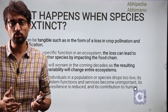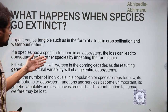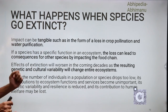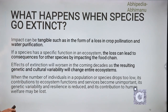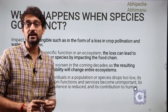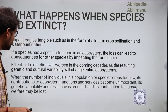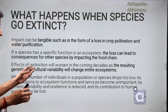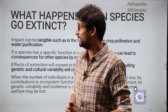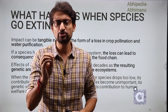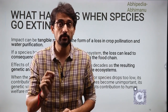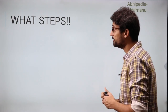What happens when an extinction or mass extinction occurs? In tangible terms, there is a loss in crop pollination and water purification. Each species has a specific function within an ecosystem — if that species goes extinct, the entire food chain can be impacted and the entire ecosystem can change. And finally, when too many species start declining, the ecosystem changes in a way that makes it very difficult to revive. If such a catastrophic event occurs, it will lead to more catastrophic events and things will go out of hand. This is a very major problem the sixth mass extinction can cause.